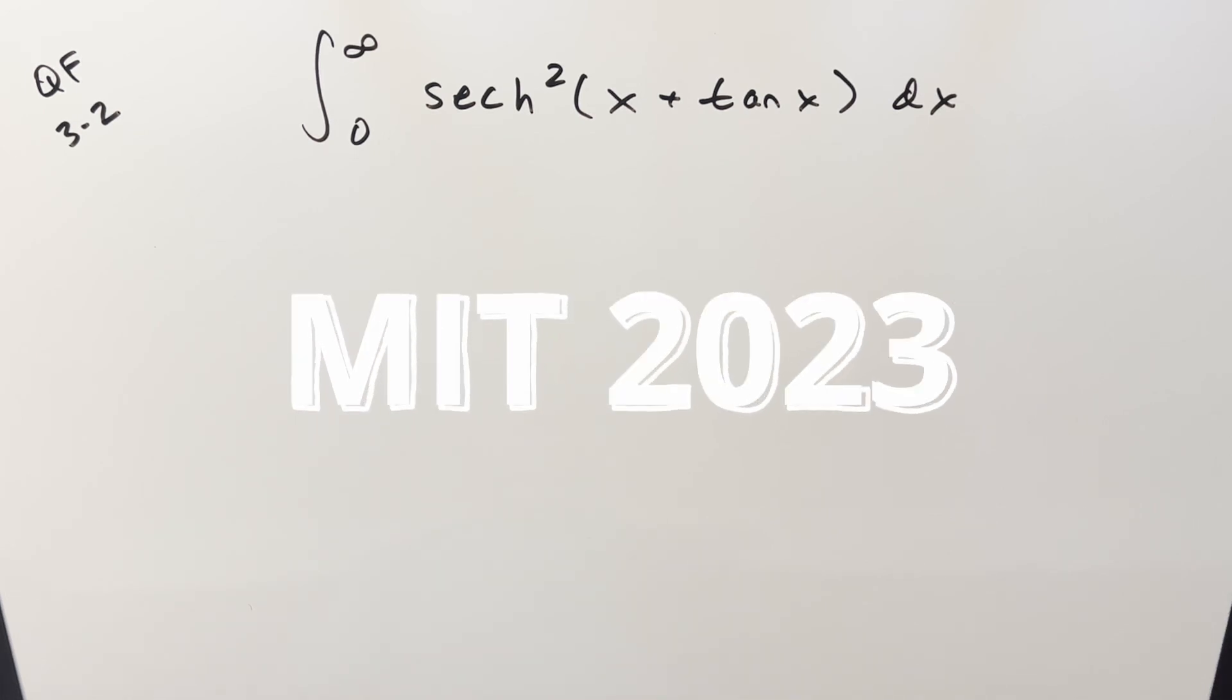Okay, we have a tricky integral from the MIT Integration B 2023 quarterfinals round three problem two. We have the integral from zero to infinity hyperbolic secant squared of x plus tan x dx.